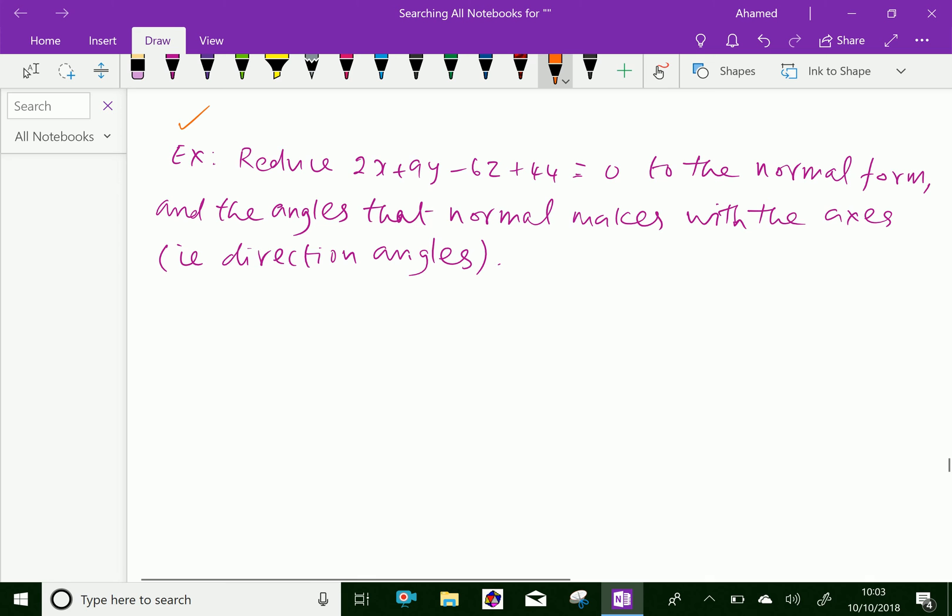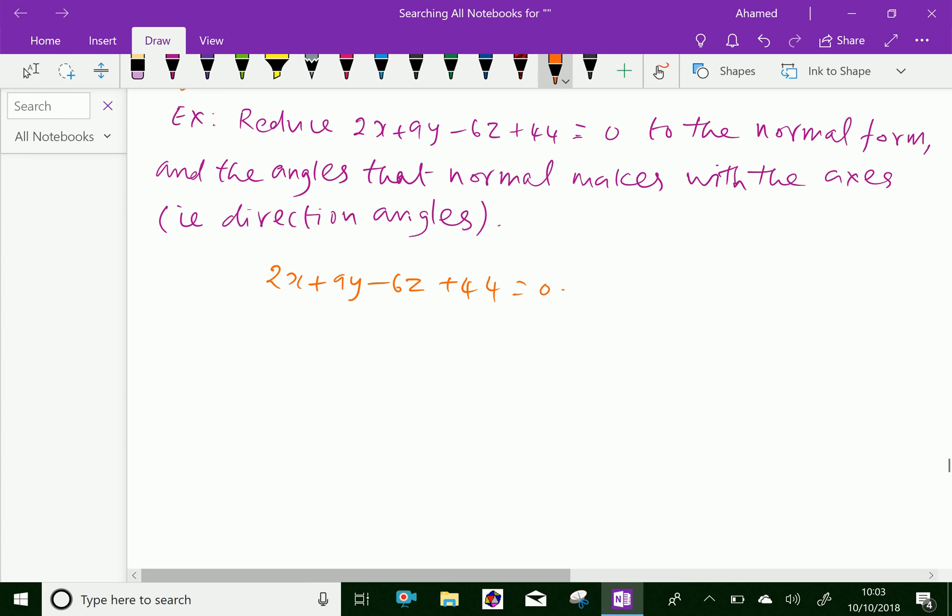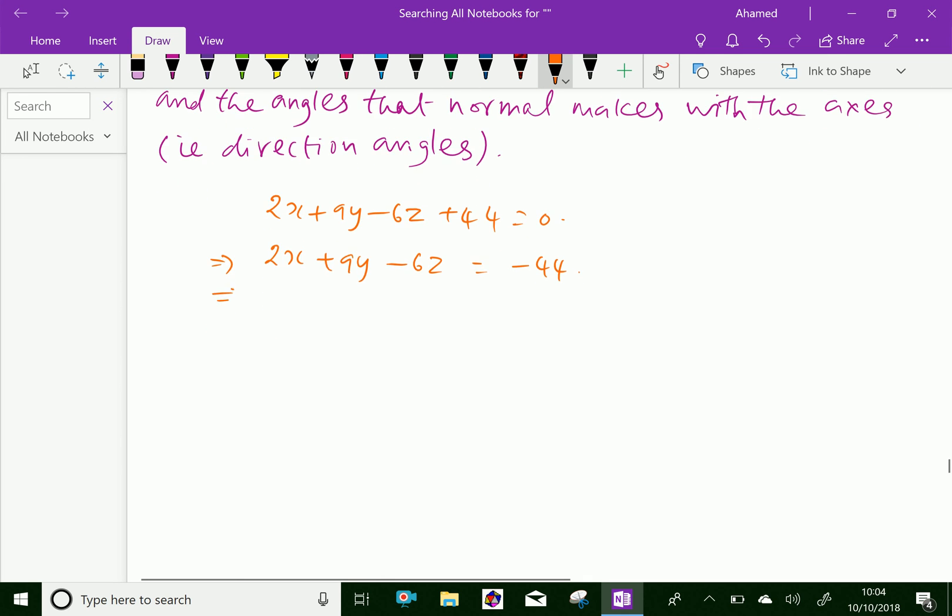The given equation of the plane is 2x plus 9y minus 6z plus 44 equals 0. Here first we have to keep the constant on that side: 2x plus 9y minus 6z equals minus 44. To make the normal form, the constant must be positive, so we multiply with minus 1 to get minus 2x minus 9y plus 6z equals 44.